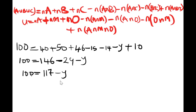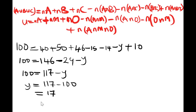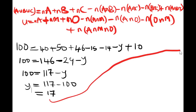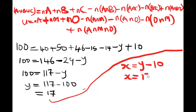Making y the subject of the formula: y = 117 − 100 = 17. Remember we are asked to find the number of traders that sell oranges and mangoes only, which we represented as x. So x = y − (number that sell all three fruits) = 17 − 10 = 7 traders.